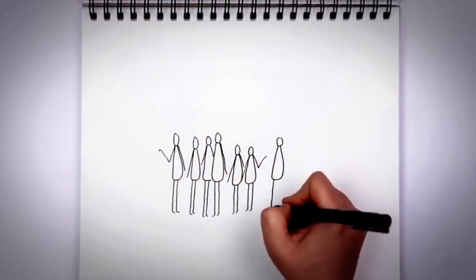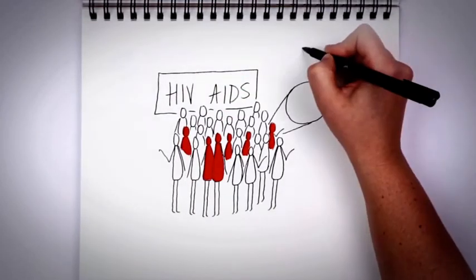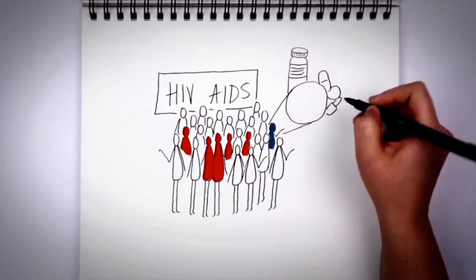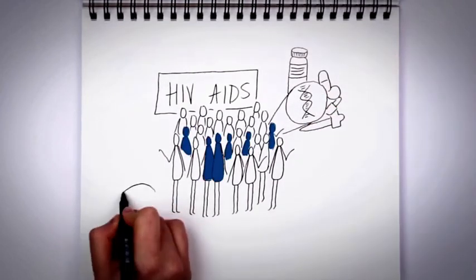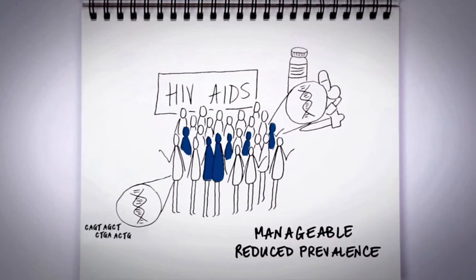For example, researchers used Genomics tools to best treat HIV with multiple drugs. The powerful combination of targeted drugs and genomic tools to guide their use has transformed HIV into a manageable chronic disease with dramatically reduced prevalence.